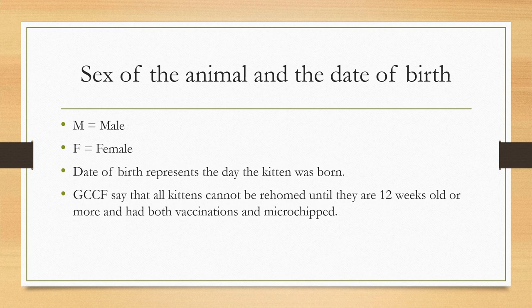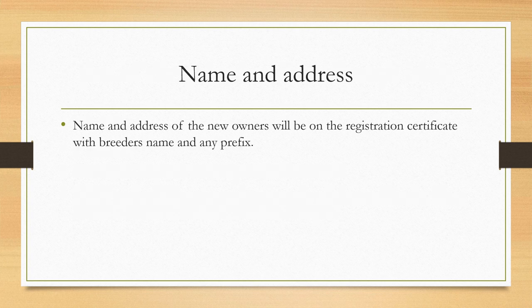Sex of the animal — male or female — and date of birth represents the day the kittens were born. All kittens cannot be rehomed until they are 12 weeks old or more, and have both vaccinations and are microchipped. When you register the cat or the kittens, it will come up in the breeder's name to start with. When you get the sheet of paper, you take it home and re-register it in your name and address. The breeder's name and prefix will still be on there.